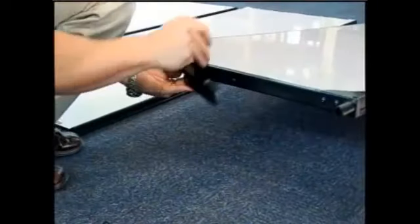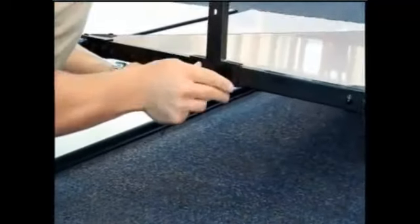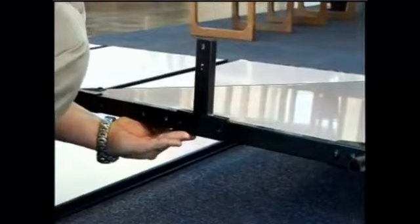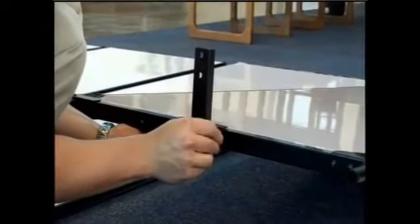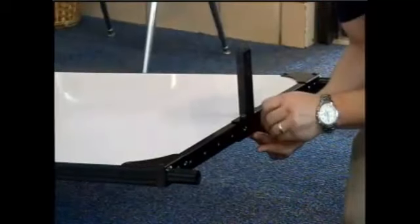Step 2. Attach T-connectors. The next step is to attach the T-connectors to the top and bottom of your end panel. You will use two screws for each connector. Repeat this step with your second end panel.